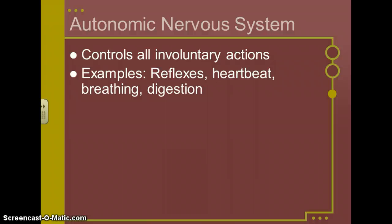On the other hand, you have the autonomic nervous system. And this controls all of the involuntary actions. Things that you don't think about, your body just automatically does. Examples of this include your reflexes, your heartbeat, breathing, and digestion.